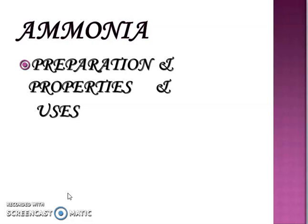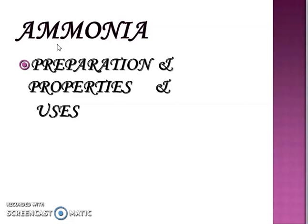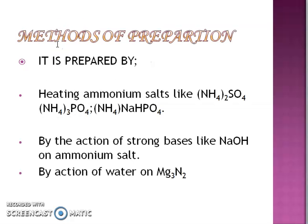Ammonia — preparation, properties and uses. You should know ammonia is NH3. NH3 means hydrides of nitrogen. So let's start with the methods of preparation.